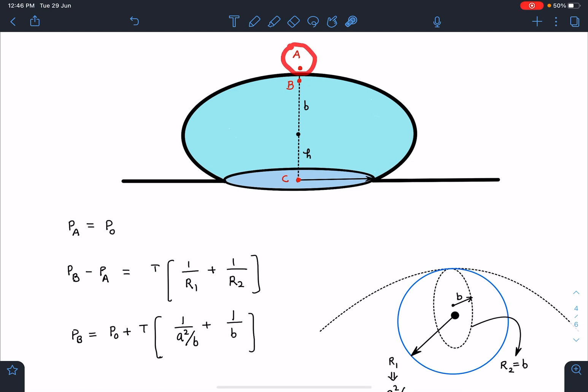Point A is open to atmosphere so pressure here is p₀. Point B is just inside and has multiple radii of curvature. I can calculate the pressure at B using surface tension and excess pressure concept. For multiple radii of curvature, one radius is a²/b and another is b. The pressure difference pB minus pA equals T times (1/R₁ + 1/R₂).